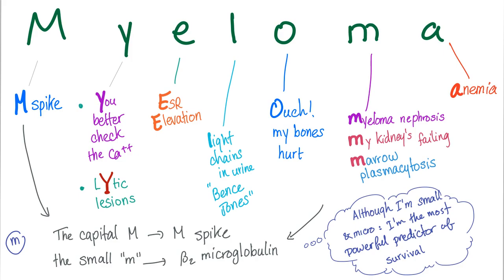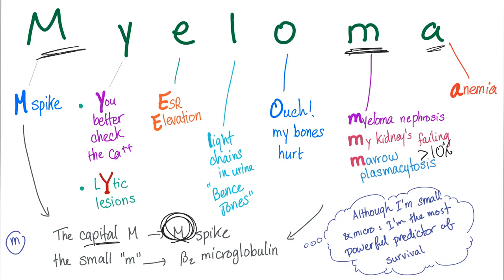There is another hilarious mnemonic coming after this, so stay tuned. M is for the M spike. Y is — you better check the calcium, and Y for lytic lesions, which lead to hypercalcemia. E is for ESR elevation. L is for light chains in the urine, called Bence Jones or paraproteins. O for 'ouch, my bones hurt.' M for myeloma nephrosis, also known as 'my kidneys are failing,' and also marrow plasmacytosis greater than 10%. A is for anemia, which is normocytic normochromic. Note: uppercase M is for the M spike on electrophoresis, and lowercase M is for beta-2 microglobulin.